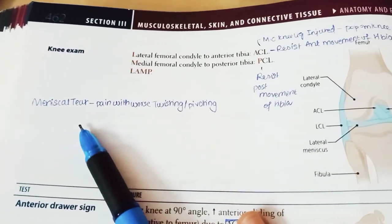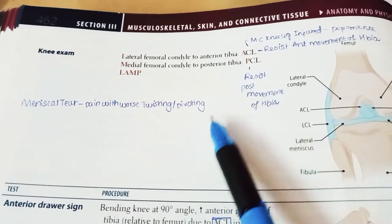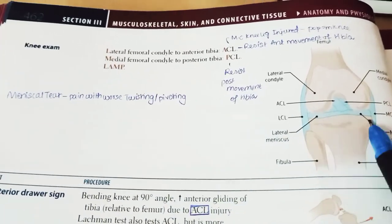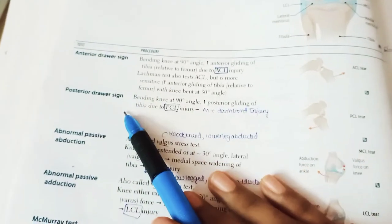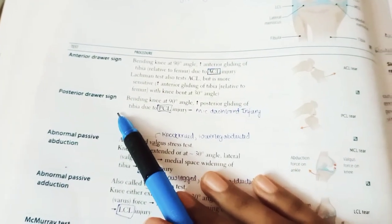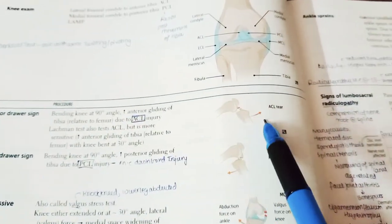Now let's come to the meniscus. The meniscal tear presents with pain during first twisting and pivoting. Now let us discuss the drawer signs — the anterior drawer sign and the posterior drawer sign.